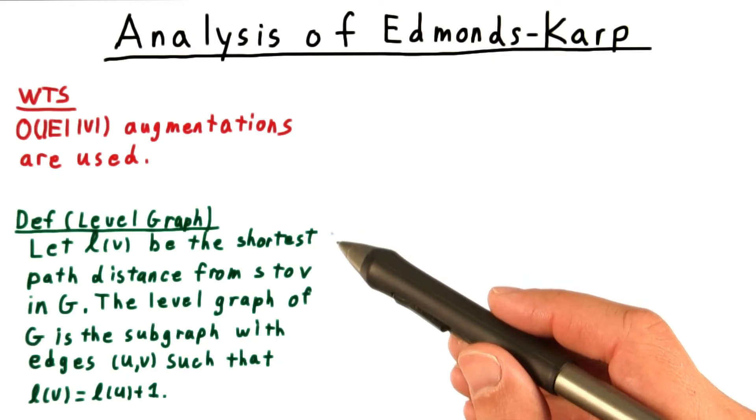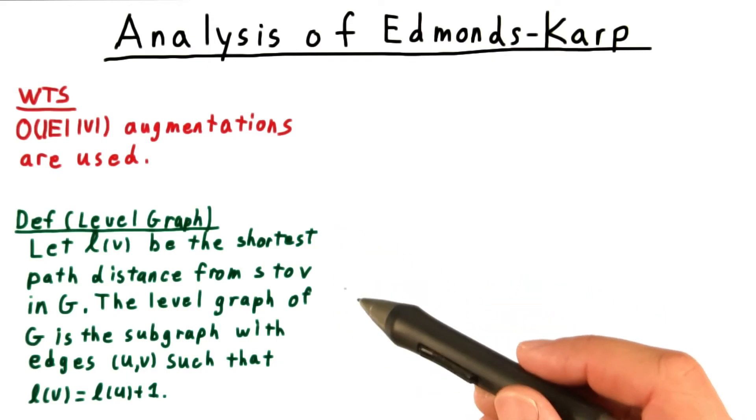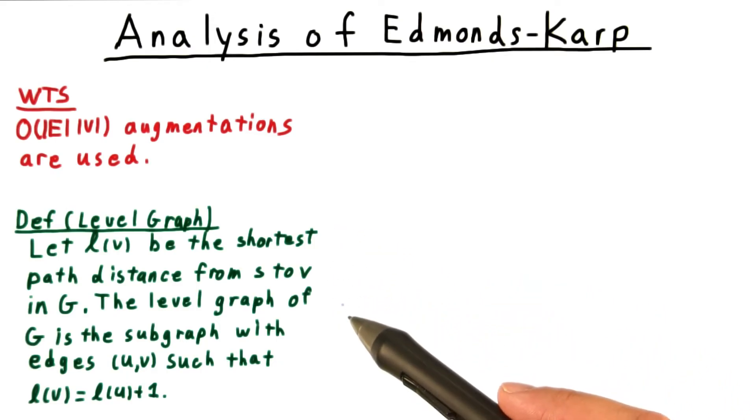To see this, we define something called a level graph. The level of a vertex is defined to be the shortest path distance from the source vertex s. The level graph then is a subgraph of the original that includes only those edges from one level to a level that's one higher.